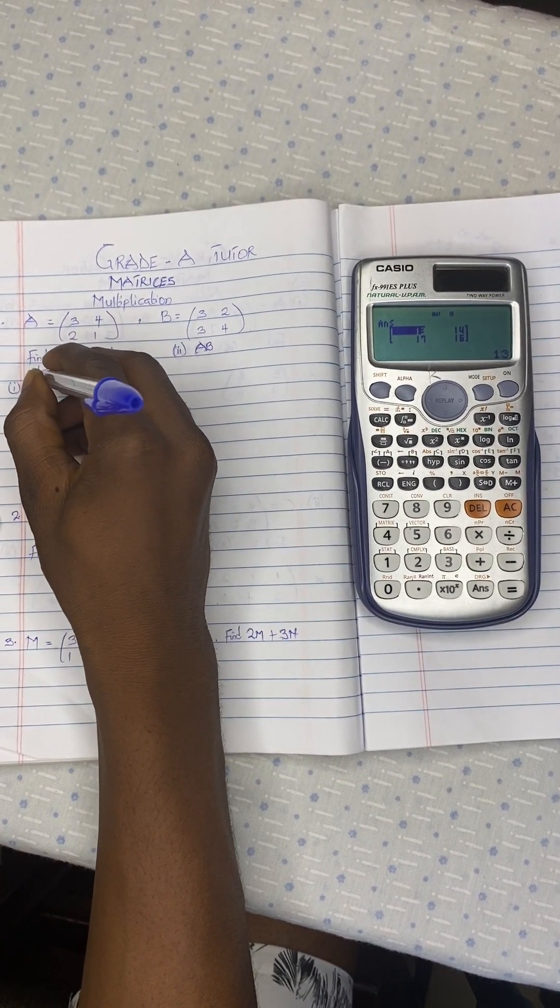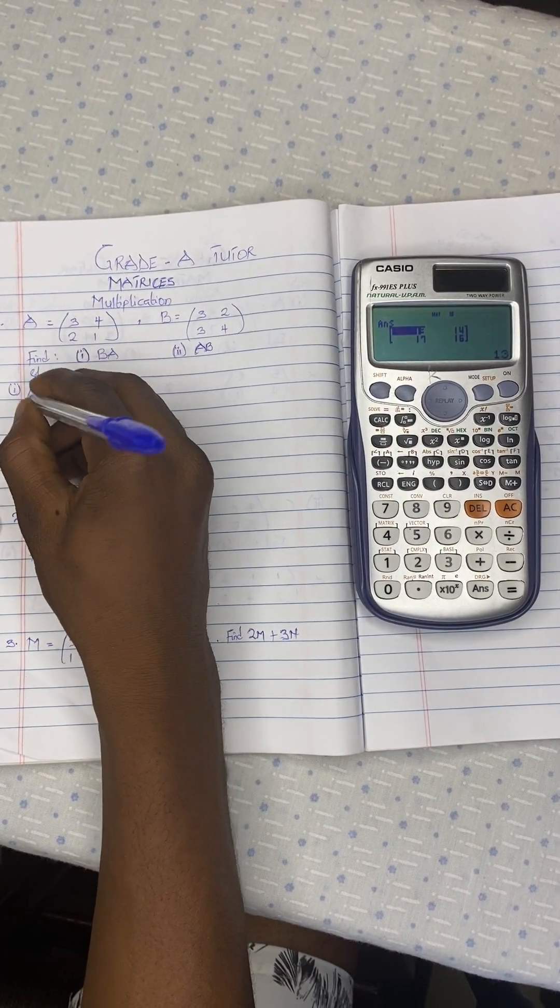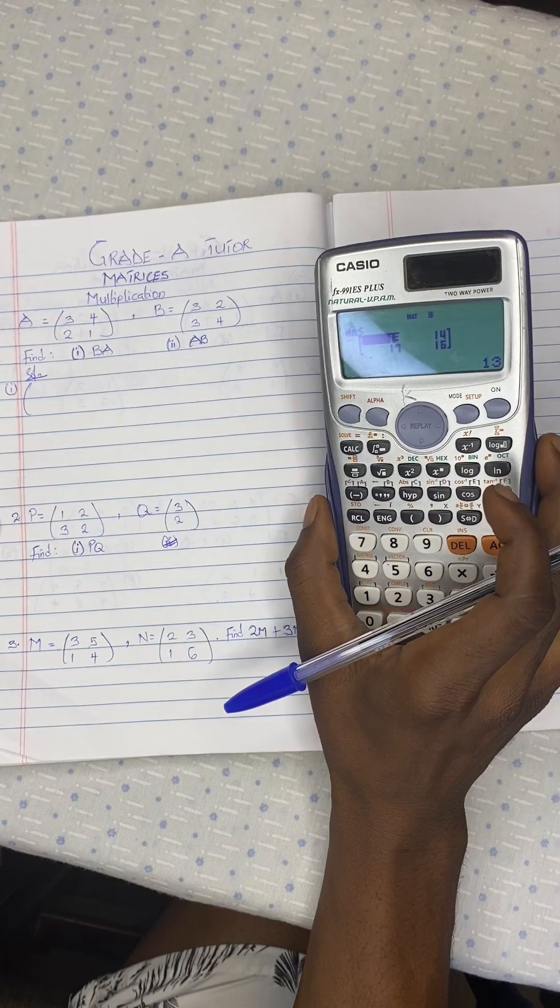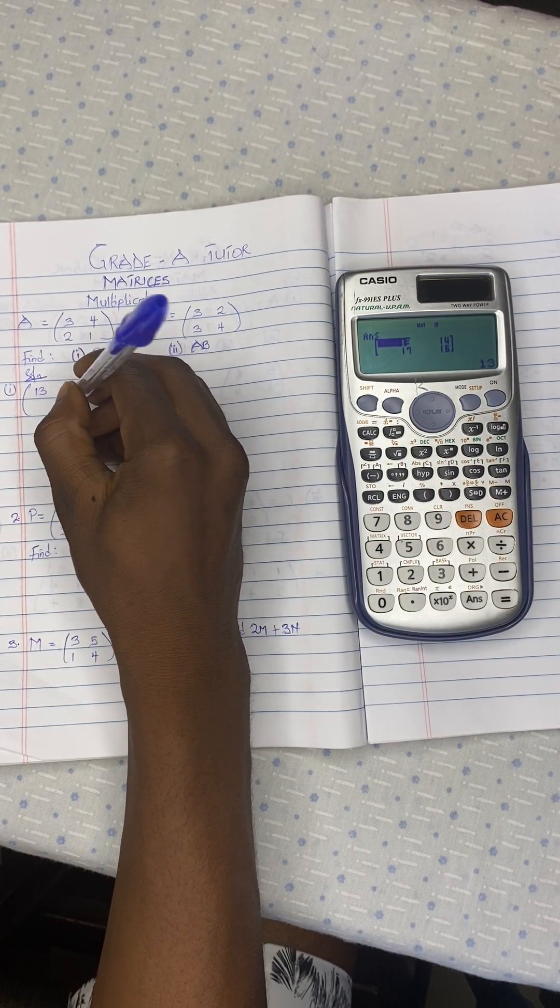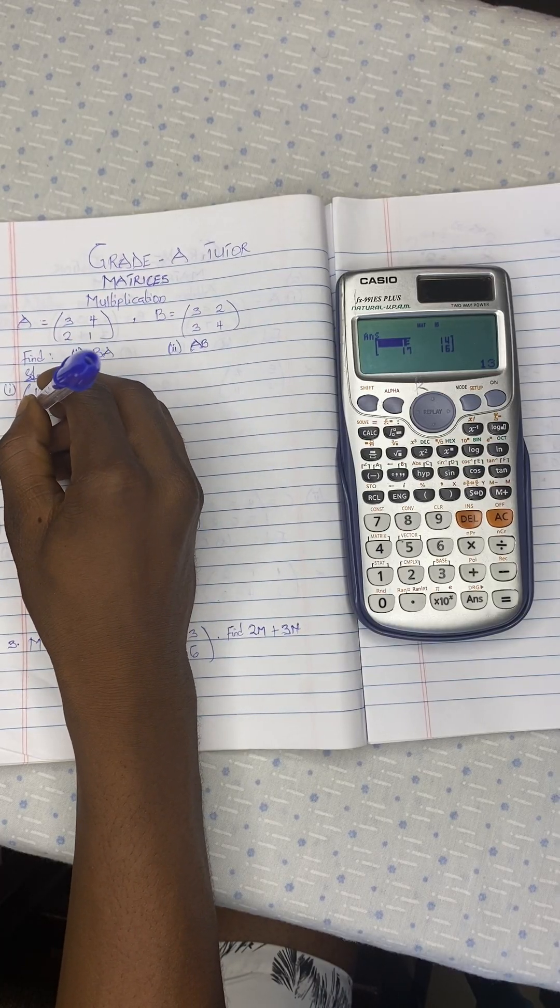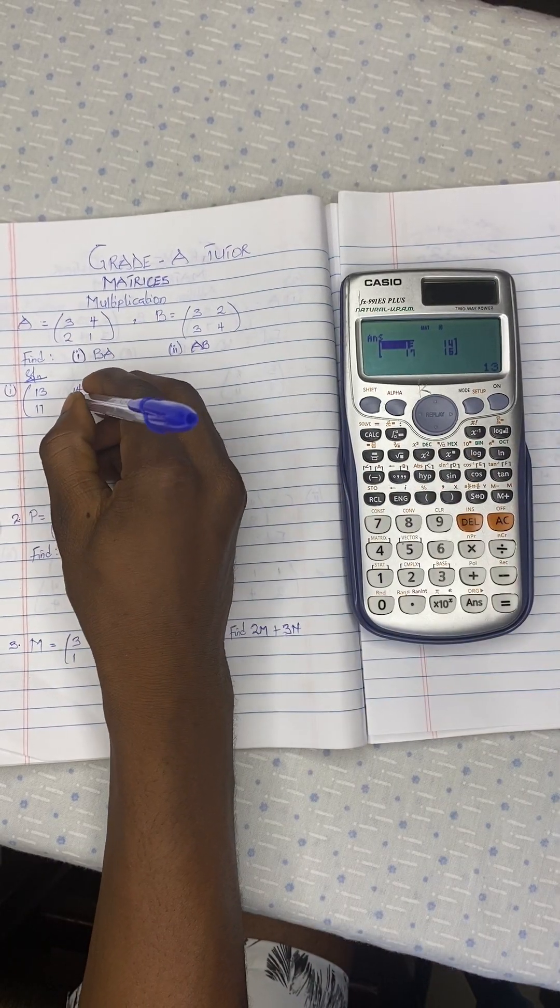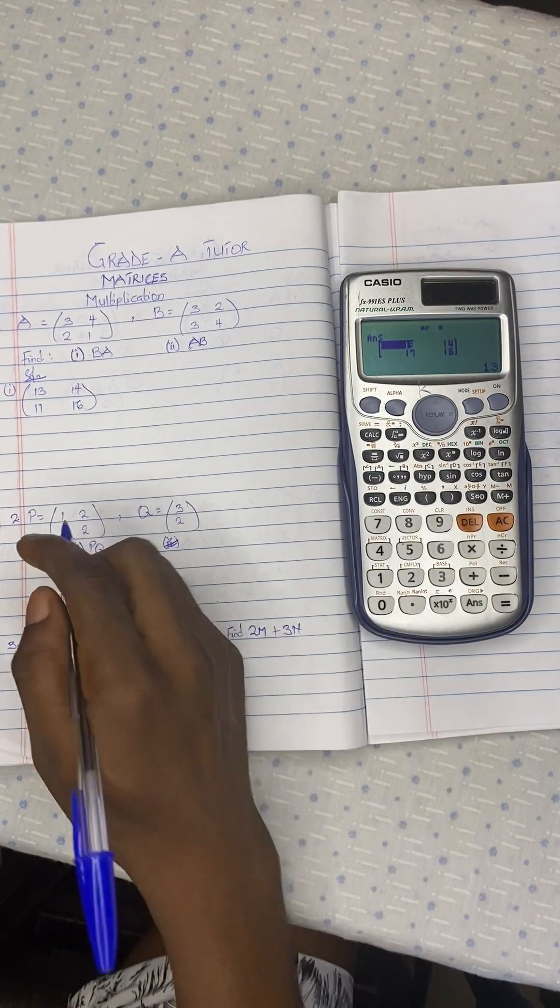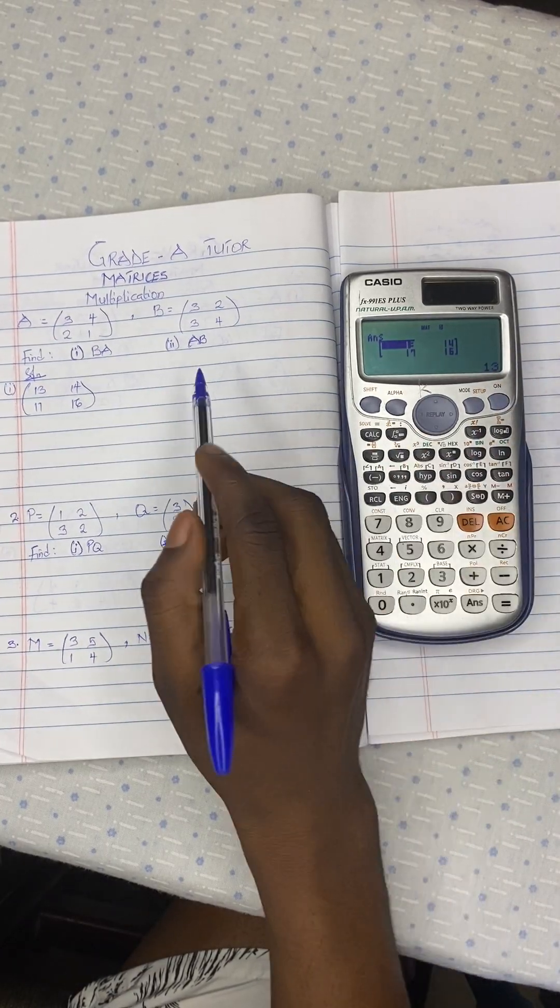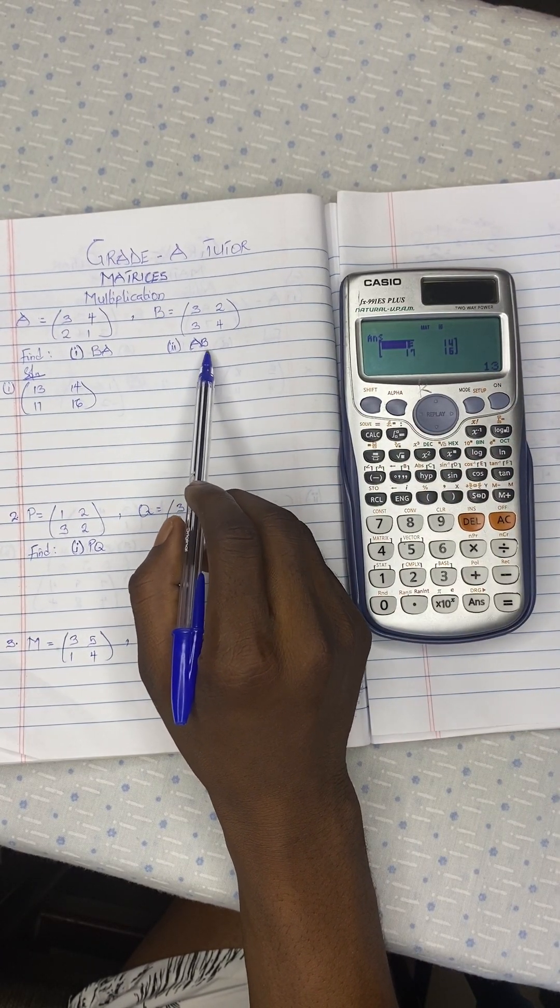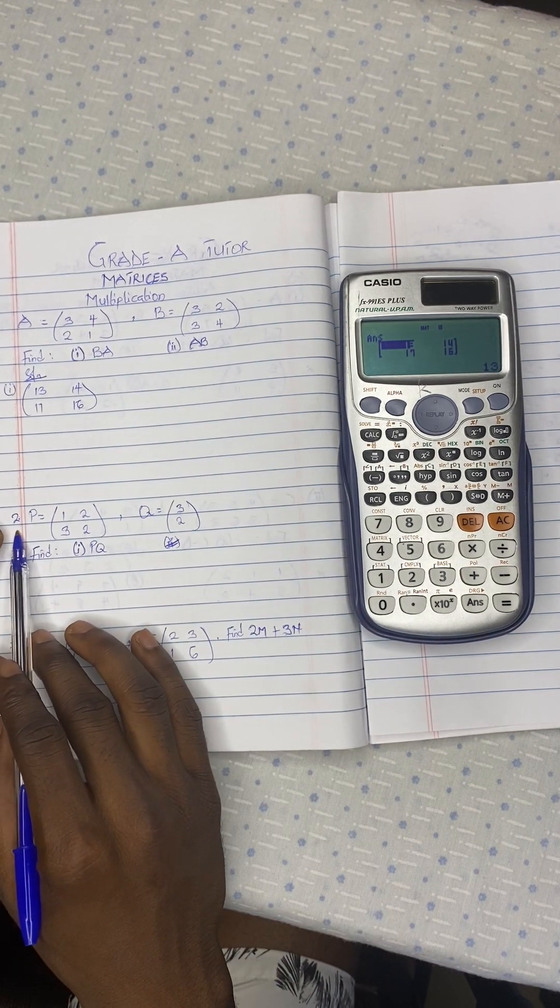So the solution. The final answer is 13, 14, 17, 16. So with the same parameters and data, just use it to calculate for the second one, that is A multiplying B. Then let's move on to the second question.